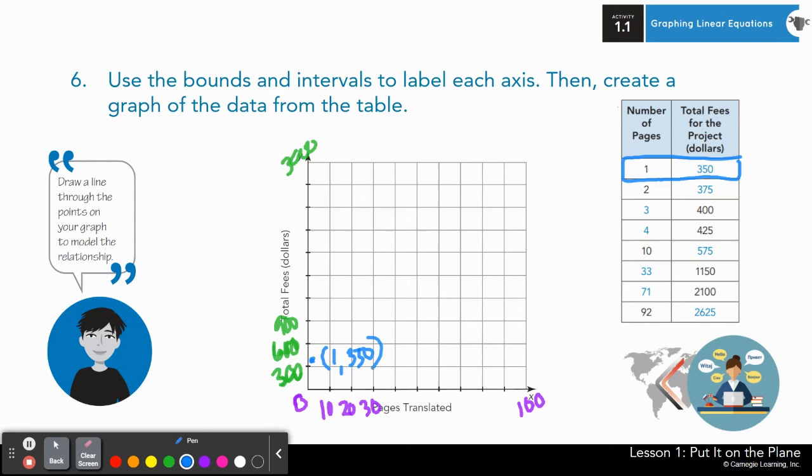Now remember, don't draw those lines that got you to your point. Only plot your point, and that is it. And if you'd like, you can even label your point on the graph, just like I did here. That point is 1, 350. At this time on your own or with a partner, set a timer for about three to four minutes to plot the rest of these points. And then we will compare answers. Pause here.